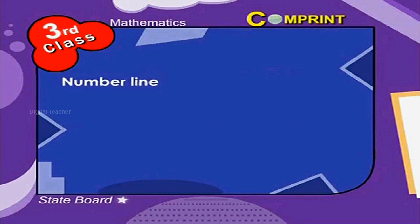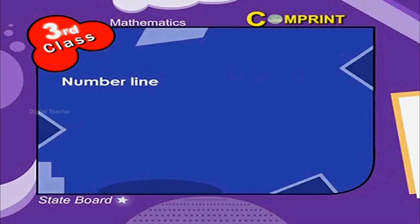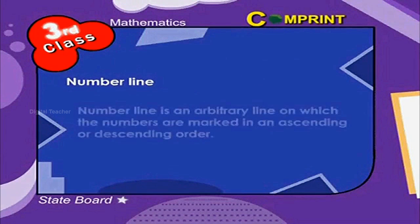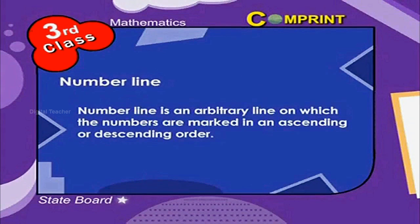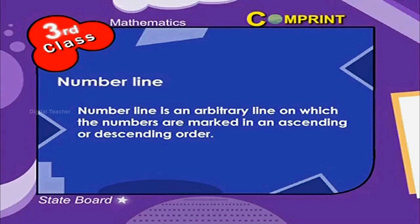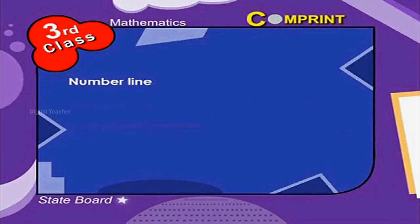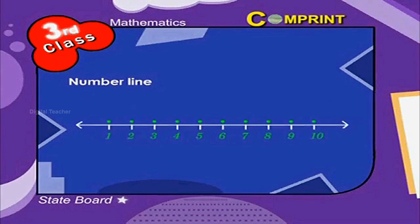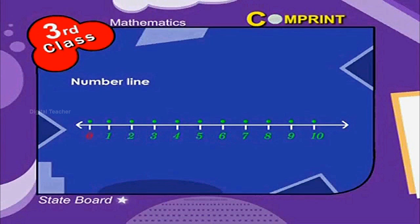Addition of numbers using a number line. A number line is an arbitrary line on which the numbers are marked in ascending or descending order. This is the number line, ranging from 0 to 10.